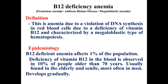Now let's discuss B12 deficiency anemia. This is anemia due to a violation of DNA synthesis in red blood cells, due to deficiency of vitamin B12, and is characterized by a megaloblastic type of hematopoiesis. Normally we have normoblastic type of hematopoiesis in bone marrow, which changes in B12 deficiency anemia to megaloblastic type. B12 deficiency anemia affects only 1% of the population — it is less common than iron deficiency.